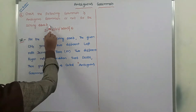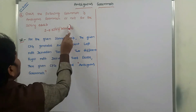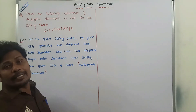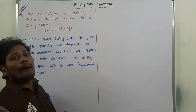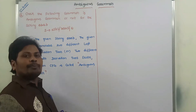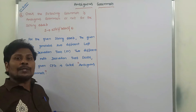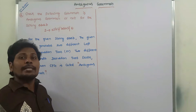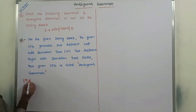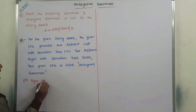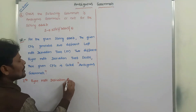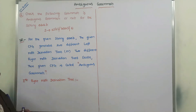The given terminal string is abab. For that string, if this grammar generates two different leftmost derivation trees or two different rightmost derivation trees, then that given context-free grammar is called an ambiguous grammar. In the previous problem we considered two leftmost derivation trees, but in this problem we have to consider two rightmost derivation trees. Now, first rightmost derivation tree.